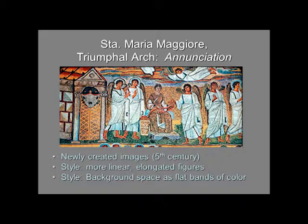One of the things we want to notice is the style of the triumphal arch mosaics. The imagery or iconography is newly created in the fifth century in response to Mary's elevated status as Mother of God, which was declared in 431 at the Council of Ephesus. So these images cannot copy earlier examples, and we see that the style has become more linear and the figures are more elongated — the head is smaller in relationship to the body, or the figure is stretched longer and thinner. I'm comparing these to the images we just saw on the nave wall.